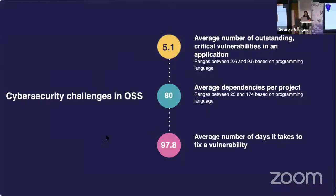Let's look at some numbers. The average number of days it takes to fix a vulnerability is almost 100 days. The average number of outstanding critical vulnerabilities in an application is around five, depending on your programming language. And the average number of top-level dependencies per project is around 80.